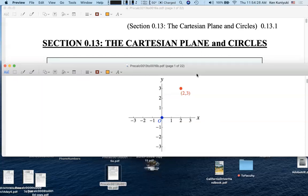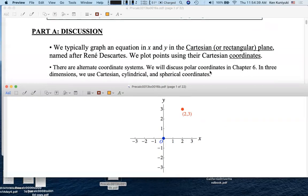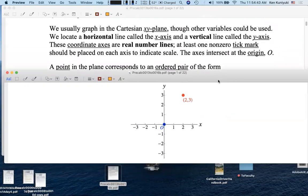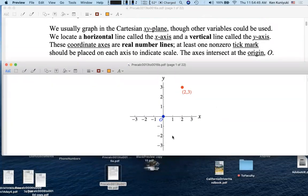Anyway, what do we have here? We have a horizontal line called the x-axis, which is a real number line, and a vertical line called the y-axis, which is also a real number line. These two perpendicular real number lines intersect at a point called the origin, which we denote with the letter O.